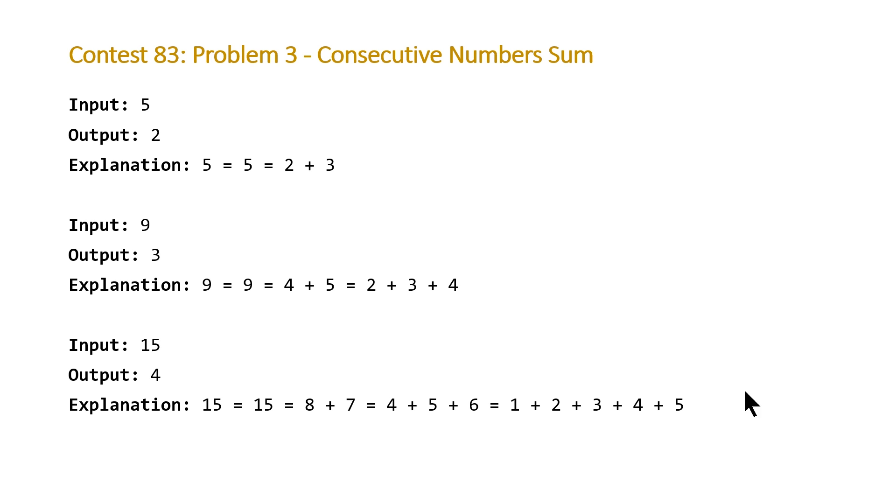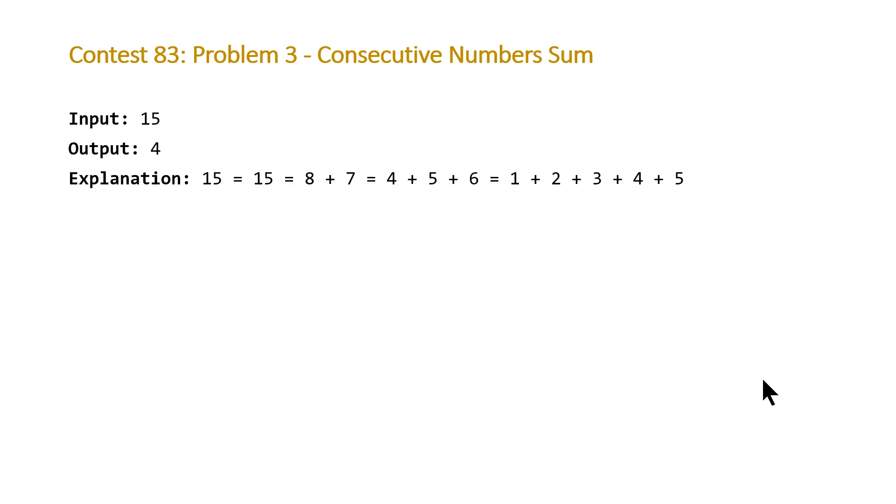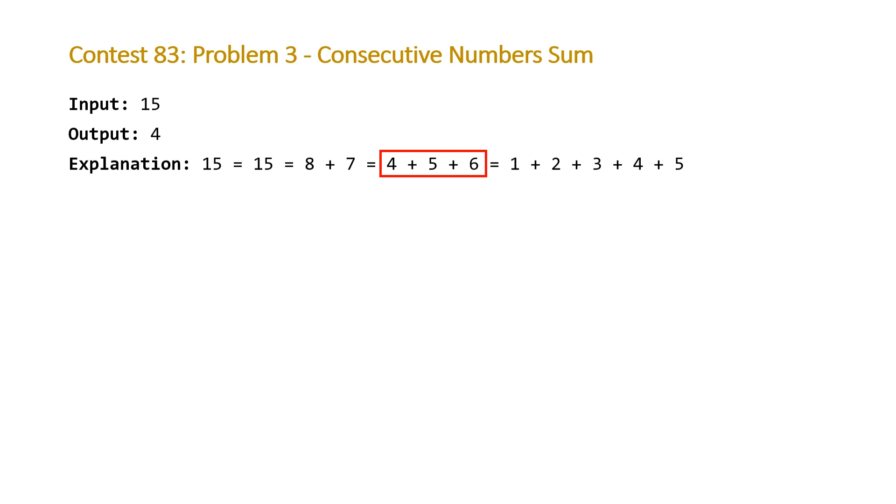We're going to focus on the last example, specifically the sum 4 plus 5 plus 6. The first thing I did for this problem was figure out a formula to calculate the sum of a sequence starting at a certain value and having a certain length. We know that an increasing series starting from 1 to N can be calculated in constant time with the formula N times (N+1) divided by 2. However, our series isn't always going to start at 1, but we can still use this fact and extract out the increasing part from our sequence starting at 1.